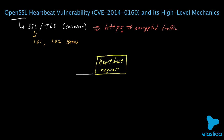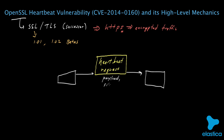The Heartbeat request is sent by one computer to another, and the request contains some request data. That data includes a payload, and it also includes some explicit information that specifies the size of that payload. The computer that's responding to a Heartbeat request will include in its response this same payload information, along with a little bit of other padding.